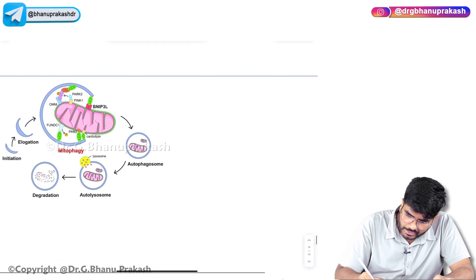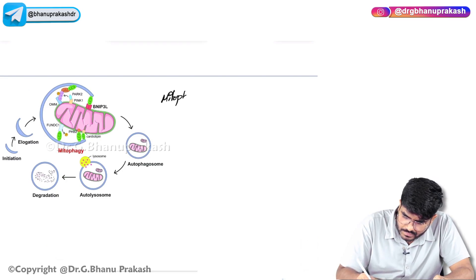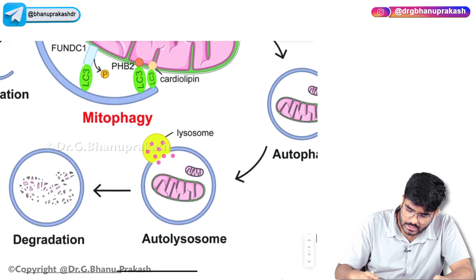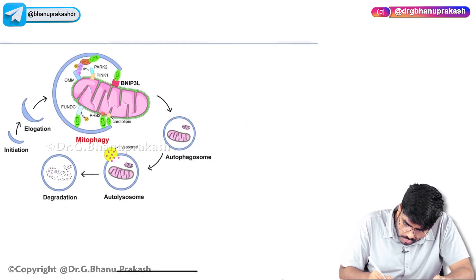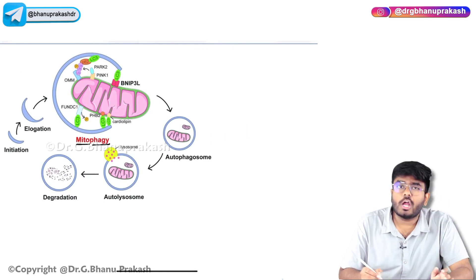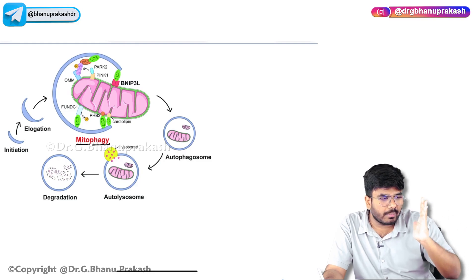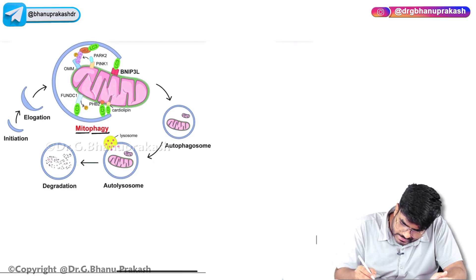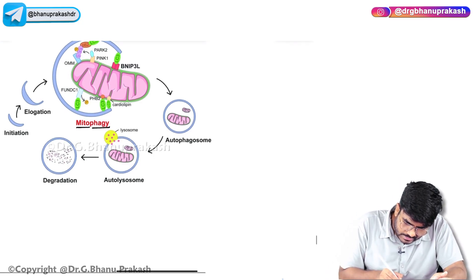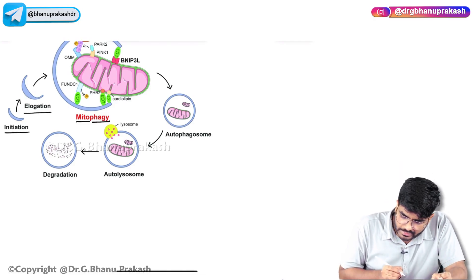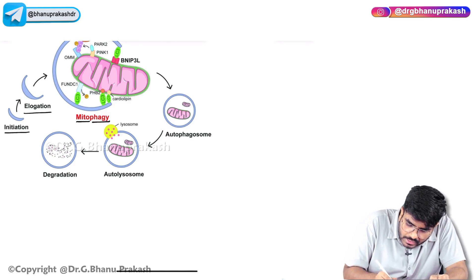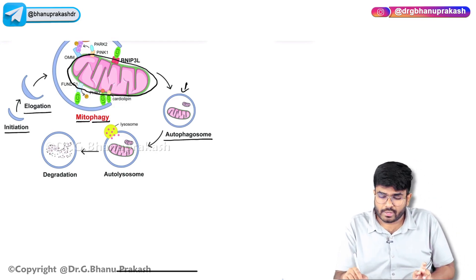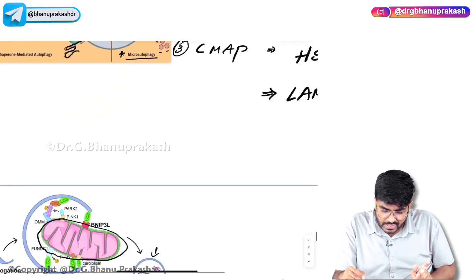The last type is mitophagy. In mitophagy, mito means only mitochondria are getting broken down — not some other proteins or cell organelles, preferentially only the mitochondria are broken down by the lysosomes. A membrane is forming only around the mitochondria. An autophagosome is formed. Autophagosomes are formed during macro autophagy as well as mitophagy.